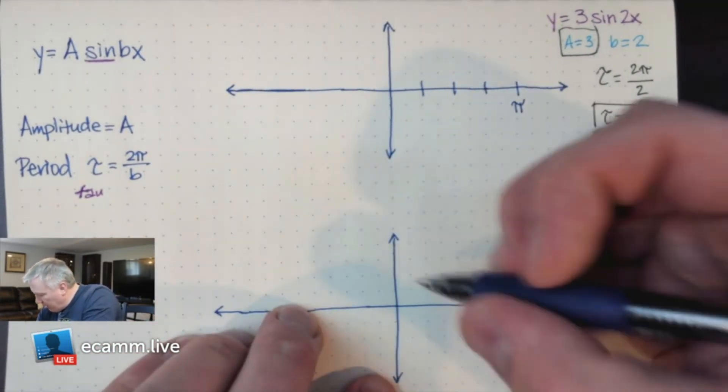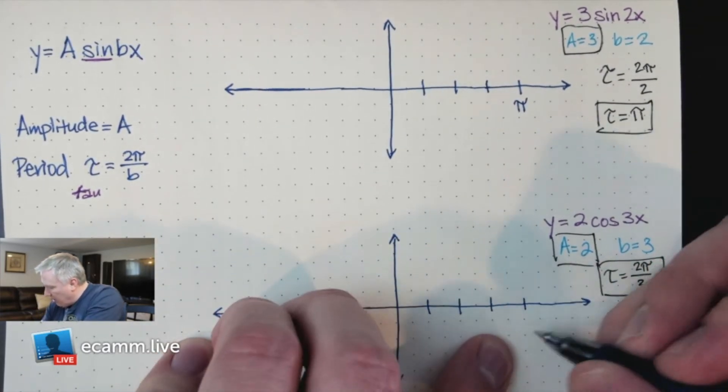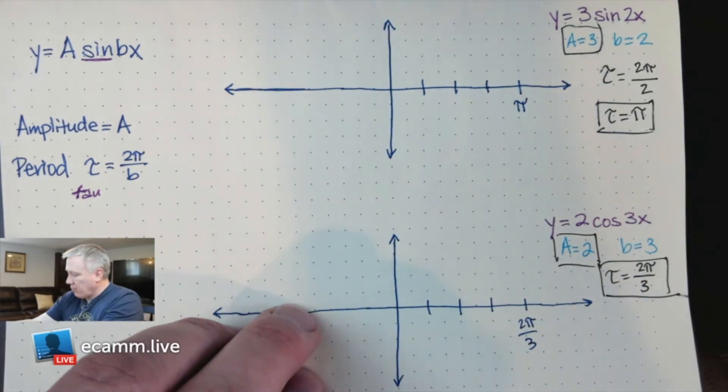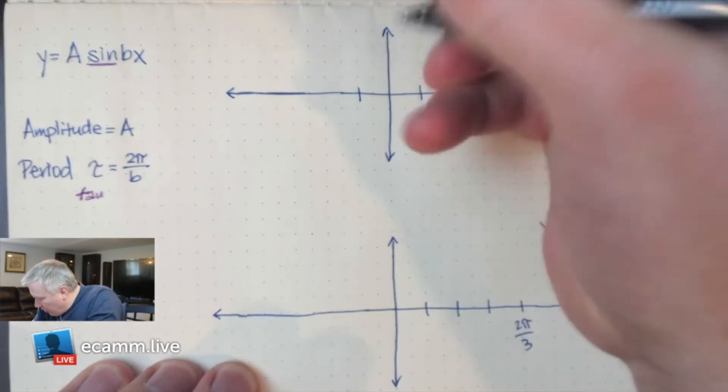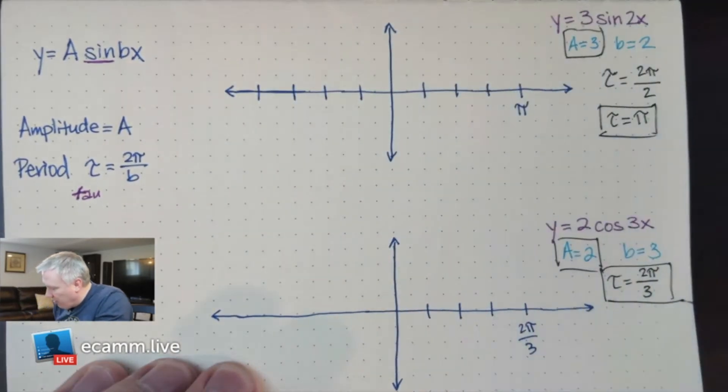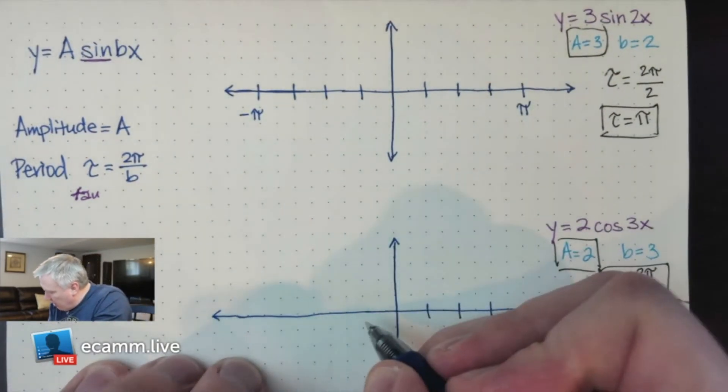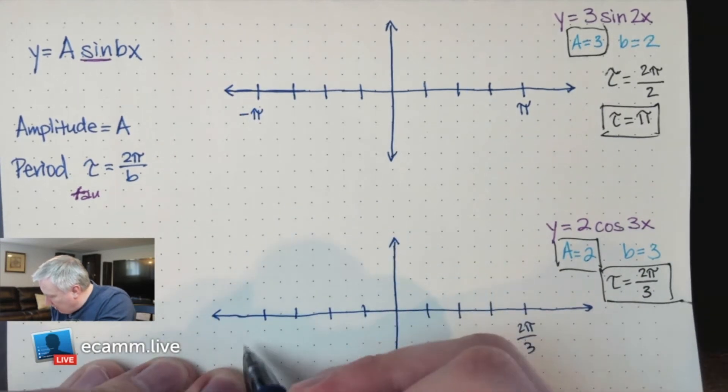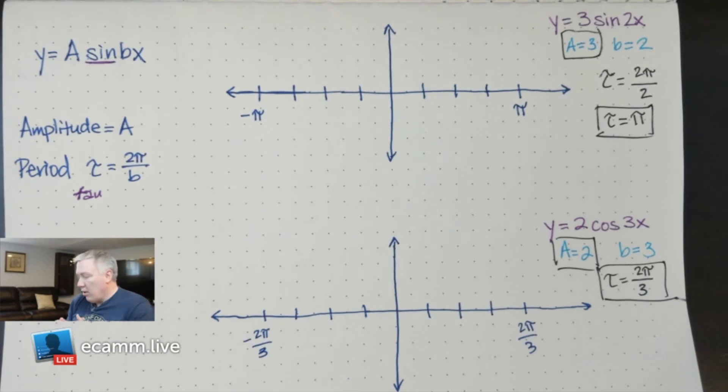And then down here, I'm going to count out 1, 2, 3, 4, and my period here is 2π over 3. Next, I'm going to go the other way. This is going to be negative π, and then let's go the other direction with this one, which is negative 2π over 3.